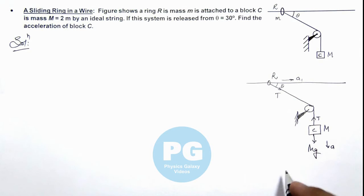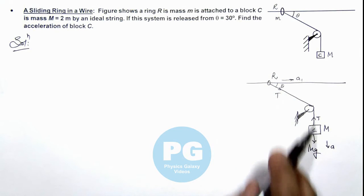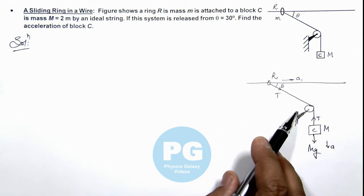Then here by constrained relation we can write along the length of string the components of the motion velocity should be equal.